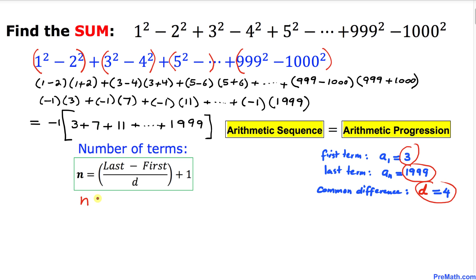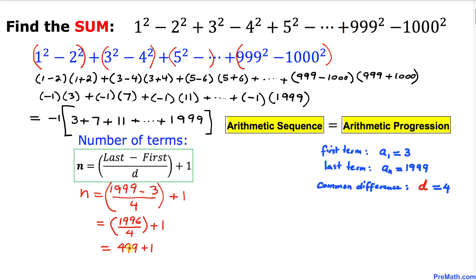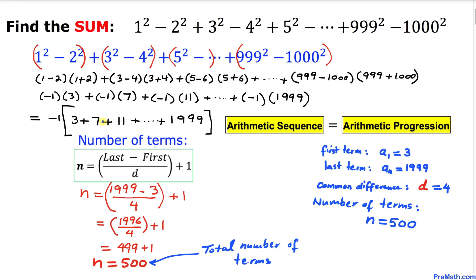Filling in the values: n = (1999 − 3) / 4 + 1. Simplifying step by step, we get 1996 / 4 = 499, and then 499 + 1 = 500. So there are 500 terms in this sequence.